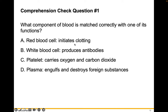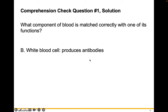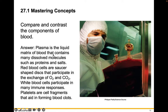Which blood component is matched correctly with one of its functions? Red blood cells initiate clotting. White blood cells produce antibodies. Platelets carry oxygen and carbon dioxide. Or plasma engulfs and destroys foreign substances. White blood cells produce antibodies — these are an important part of the immune system. Take a moment and compare and contrast the different components of blood: plasma, red blood cells, white blood cells, and platelets. Write your answer in your own words.